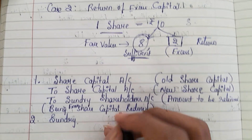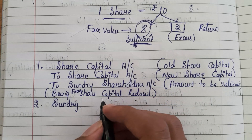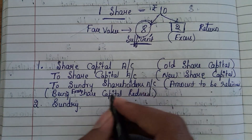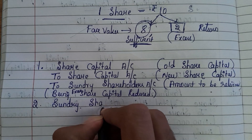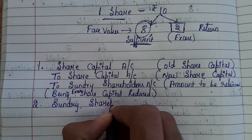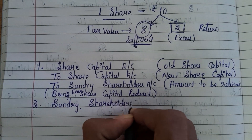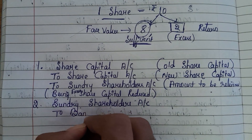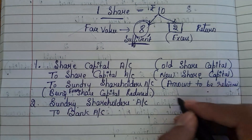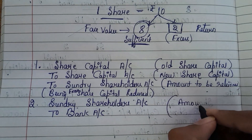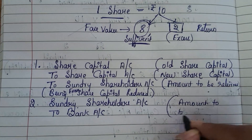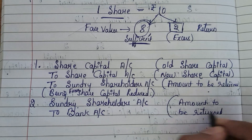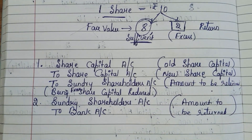The second entry: Sundry Shareholders Account debited, to Bank Account, for the amount to be returned. So only two entries we are supposed to pass here.